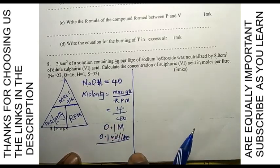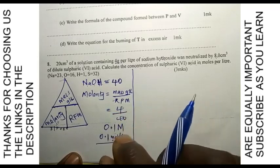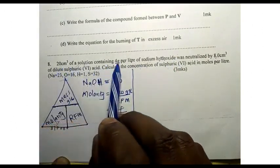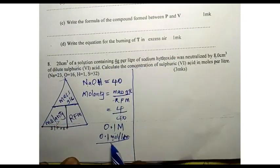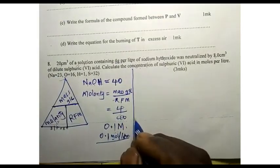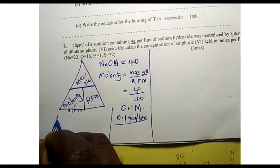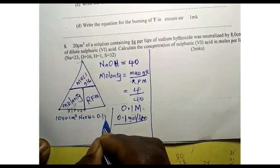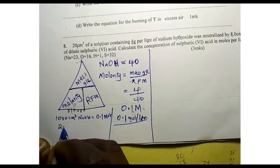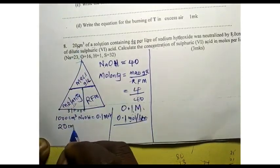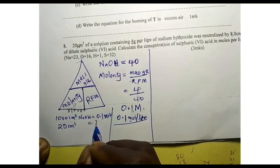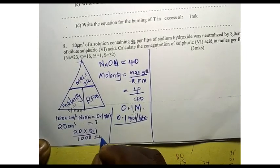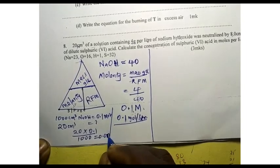Now that we have the molarity, let us see the relationship. We must write the equation so we can check the mole ratio. But before that, let us find the number of moles of sodium hydroxide that reacted with the sulfuric acid. Since 1000 cm³ contains 0.1 mol, then 20 cm³ contains 20 times 0.1 divided by 1000, which gives us 0.002 mol.